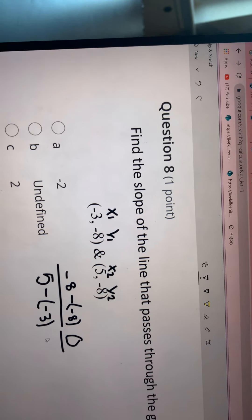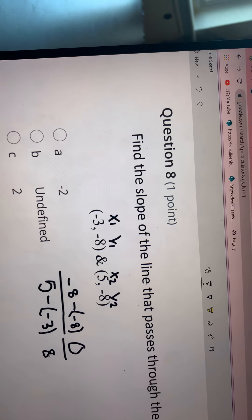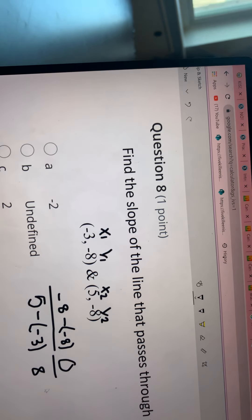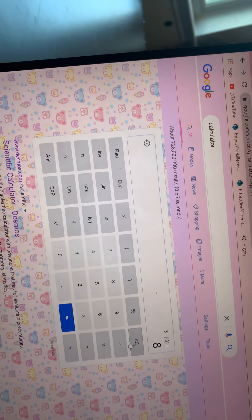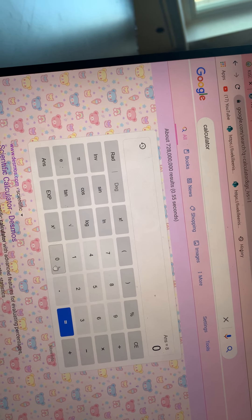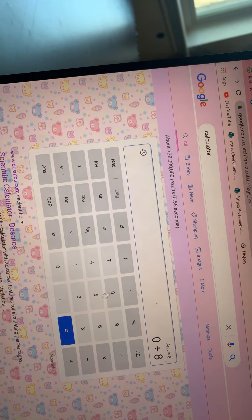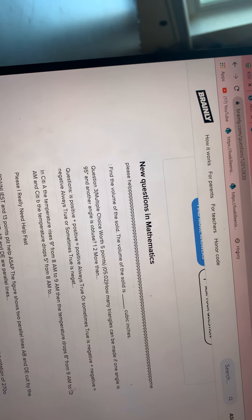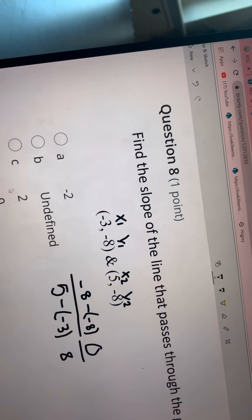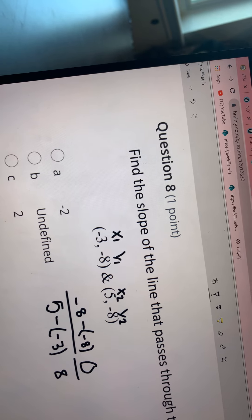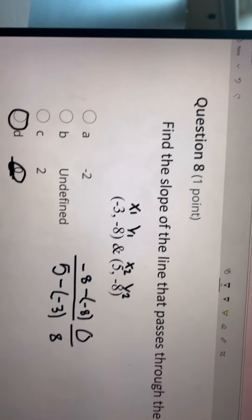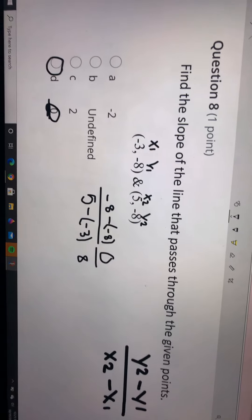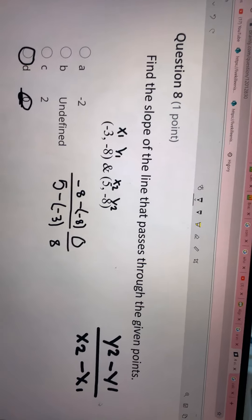Then you will have 0 over 8. Zero divided by 8 is 0, so your answer is going to be 0. That's how you do it.